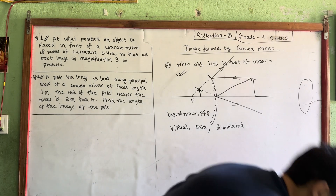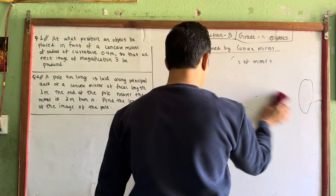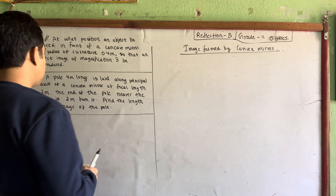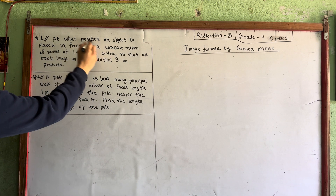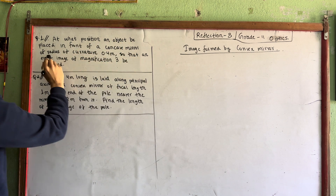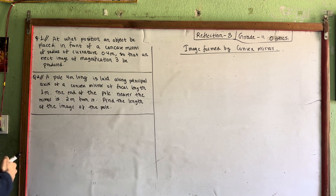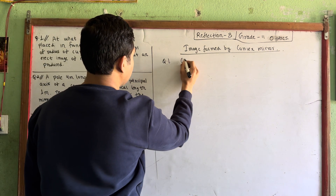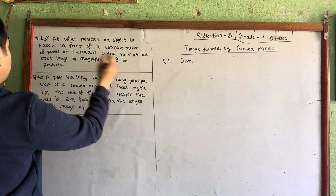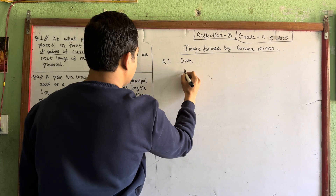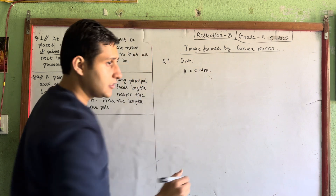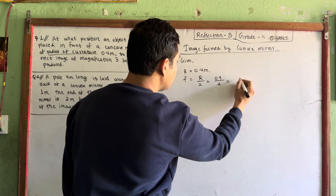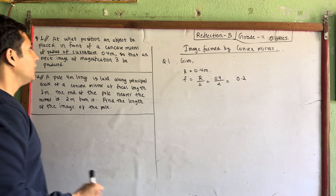Now let's start the first numerical. I am solving a question: at what position should an object be placed in front of a concave mirror of radius of curvature 0.4 meters so that an erect image of magnification 3 is formed? Given: radius of curvature = 0.4 m, so focal length f = R/2 = 0.4/2 = 0.2 m.